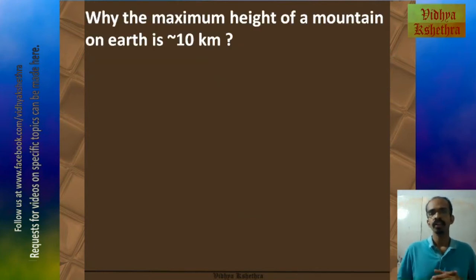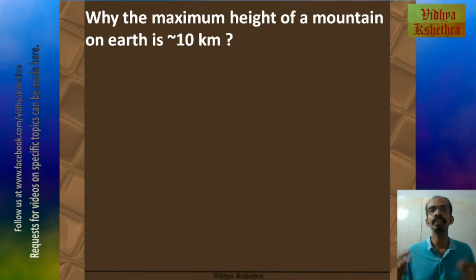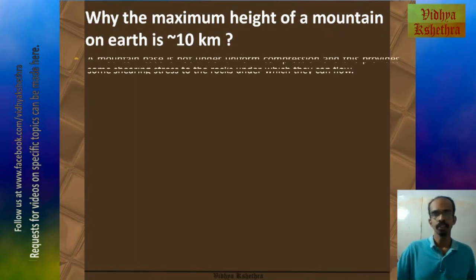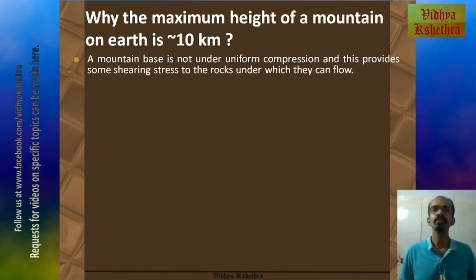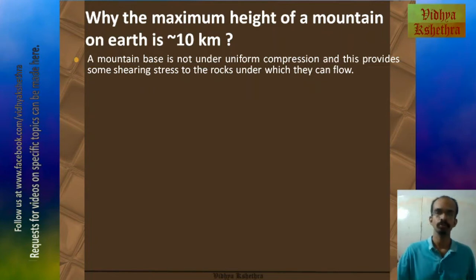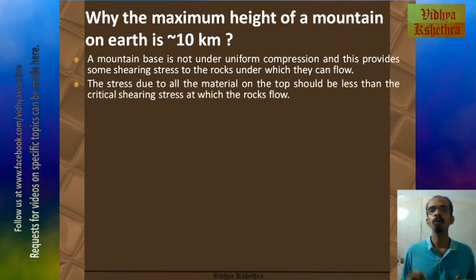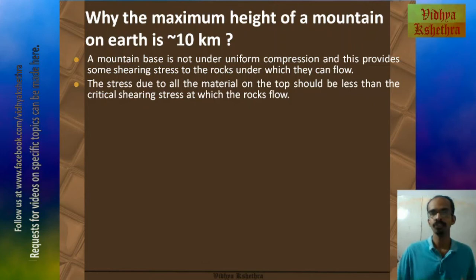Now we can see the answer to why the maximum height of a mountain on Earth is almost equal to 10 km, by applying the principles of elasticity. A mountain base is not under uniform compression, and this provides some shearing stress to the rocks under which they can flow. The stress due to all the material on top should be less than the critical shearing stress at which the rocks flow, else the rocks won't be held upright and will fall down.